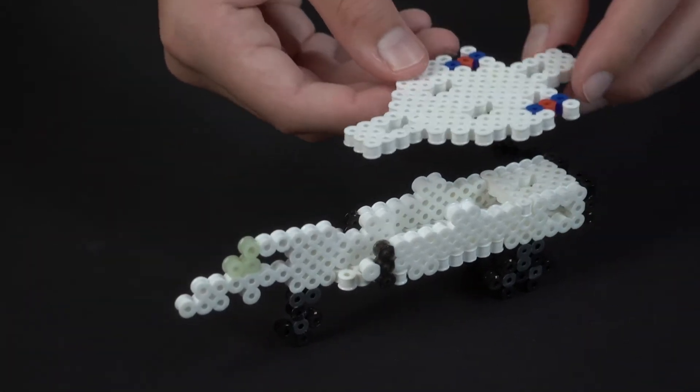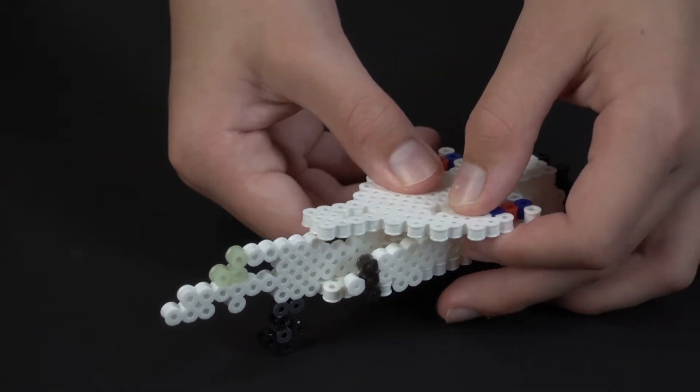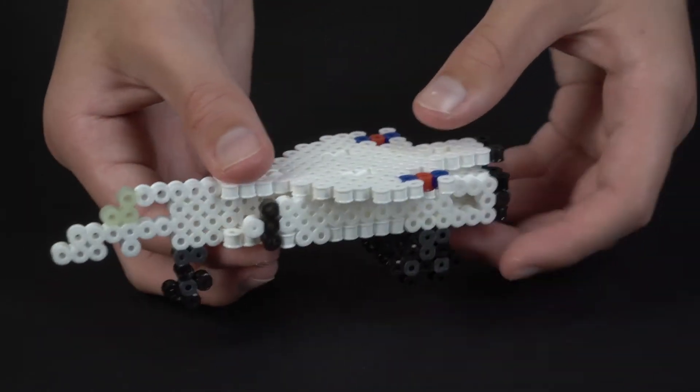Then we take the top wings and we put them in so that every single hole aligns like so.